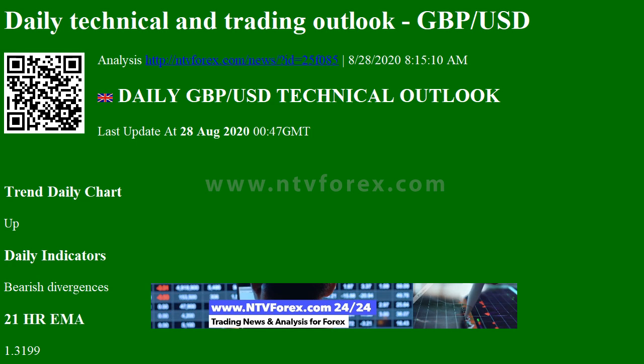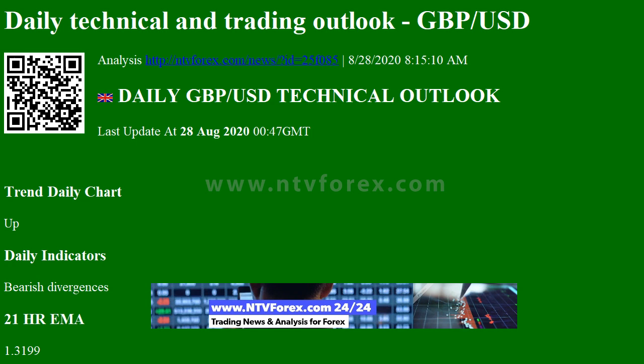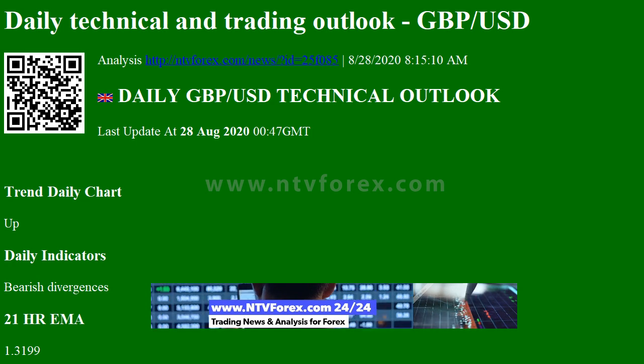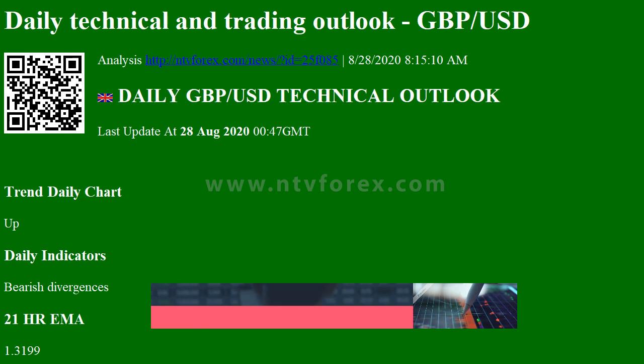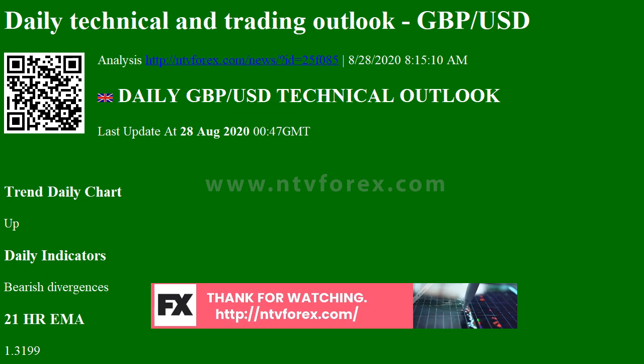Trend on the daily chart is Up. Daily indicators show Bearish Divergences. 21-hour EMA at 1.3199, 55-hour EMA at 1.3183. Trend on the hourly chart is Sideways. Hourly indicators are Turning Down. 13-hour RSI at 48. Daily analysis: Choppy Consolidation to Continue. Resistance at 1.3285. GBP/USD currently at 1.3191.